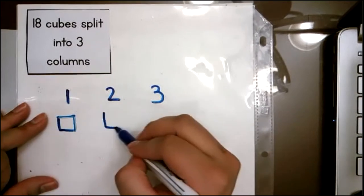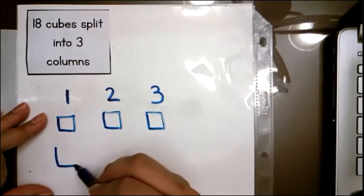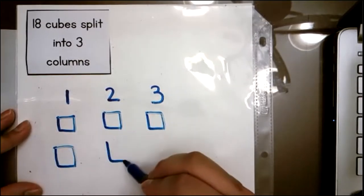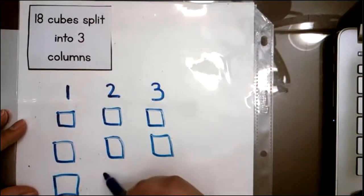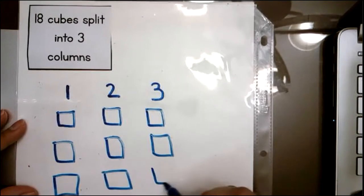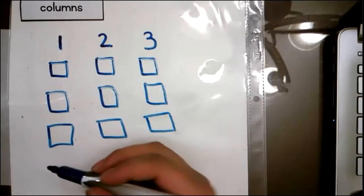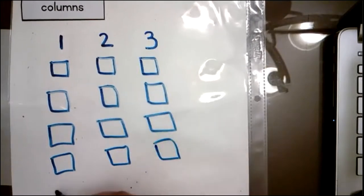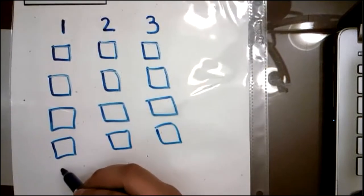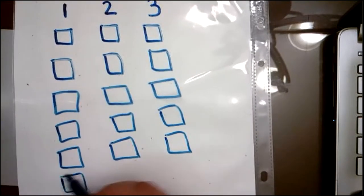So it says we have 18 cubes. I need to make sure that I distribute each cube evenly into three columns. So I am going to do one, two, three, four, five, six, seven, eight, nine, ten, eleven, twelve, thirteen, fourteen, fifteen, we're almost there, friends, sixteen, seventeen, and eighteen.